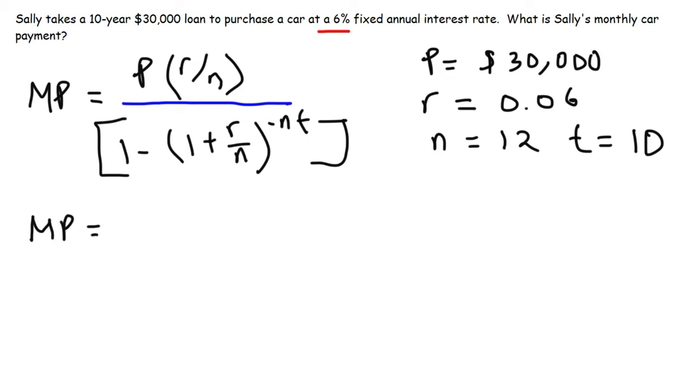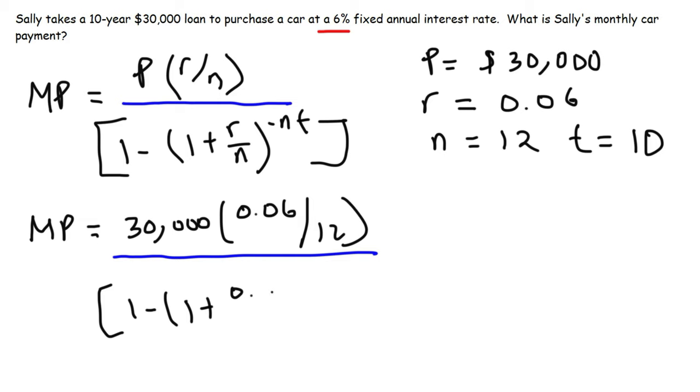Now let's go ahead and plug everything that we have into this formula. So we have the principal which is 30,000 times r over n. r is 0.06 and n is 12, all divided by 1 minus (1 plus r) - so r is the same 0.06, n is 12 - raised to the negative n times t. t is 10.